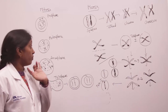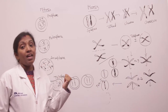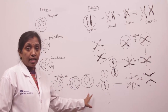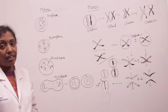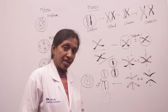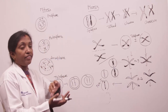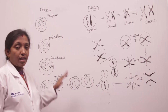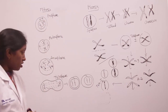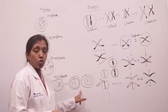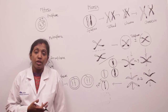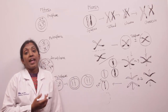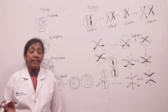Mitosis consists of prophase, metaphase, anaphase, and telophase. These two daughter cells then enter again into the interphase — the resting phase. From interphase, these two cells again divide through prophase, metaphase, anaphase, and telophase, and cell division continues.